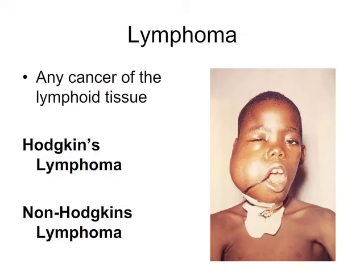Our last lymphatic disorder is lymphoma — a cancer or neoplasia of lymphatic tissue. Symptoms include swollen but non-painful lymph nodes, fatigue, and sometimes fever. The cancer cells here are derived from immature lymphocytes. There are two different types: Hodgkin's lymphoma and non-Hodgkin's lymphoma. Both types are treated with chemotherapy, although the prognosis differs markedly between these two forms. To learn more about lymphomas, please visit page 763 of your textbook.